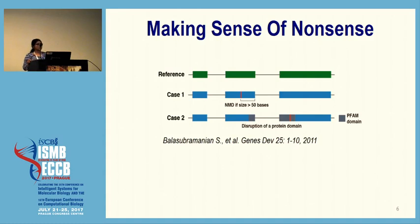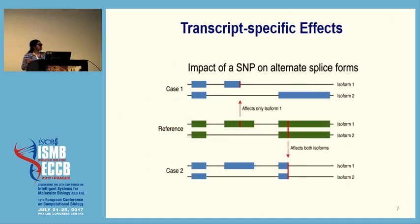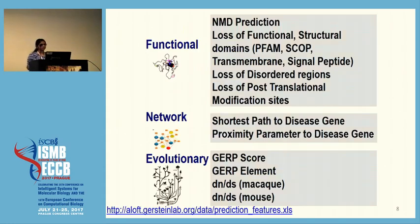Interpreting a nonsense mutation is not as straightforward as we think. There is also complexity that can arise from the existence of different isoforms. Here I'm showing examples where a SNP affects only one isoform, whereas in case two it's a stop mutation where both isoforms are affected, and it's not clear how it would affect loss of function. To essentially understand this, we developed a predictive model to figure out what stop mutations would do. I highlight a few features used: functional features, network features, and evolutionary features. Conservation is very important, network features help see how important a gene is, and functional features help understand what region is truncated once we lose that region.